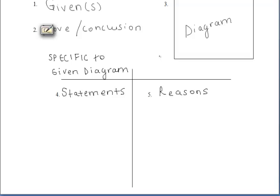While in the right-hand column, everything there, our reasons column, that will include general information. And this general information is information that we've learned in this geometry class thus far, such as theorems, definitions, and postulates.